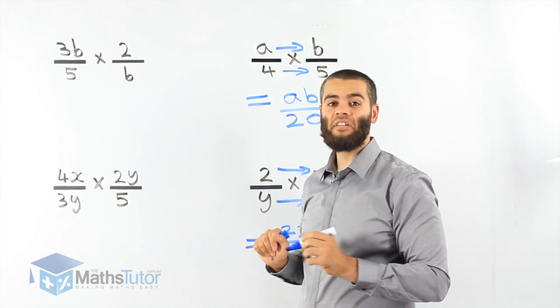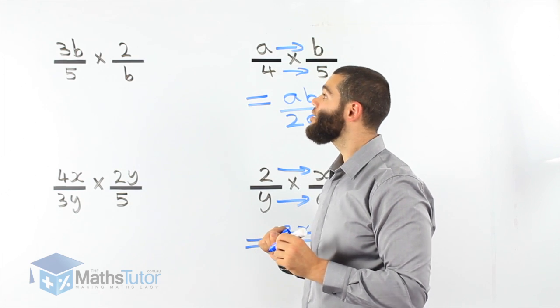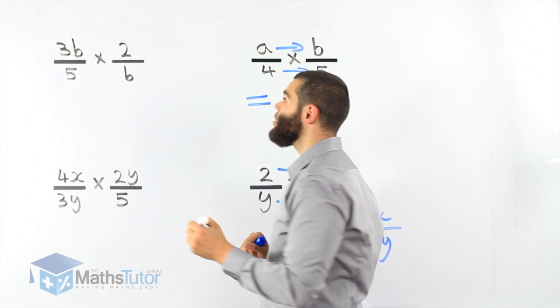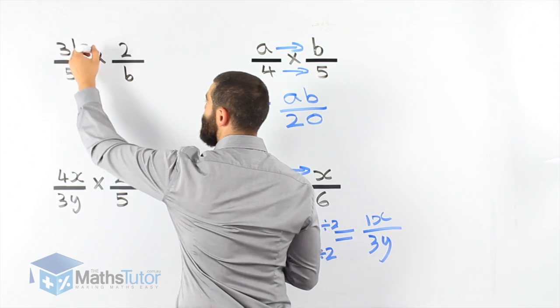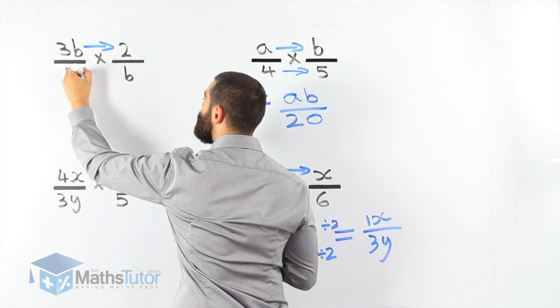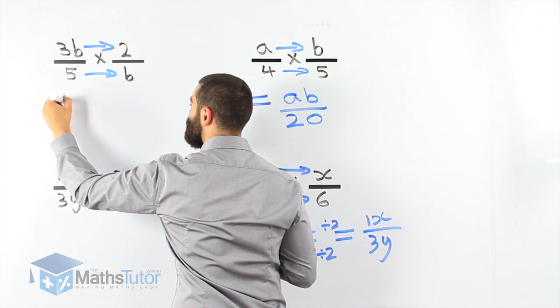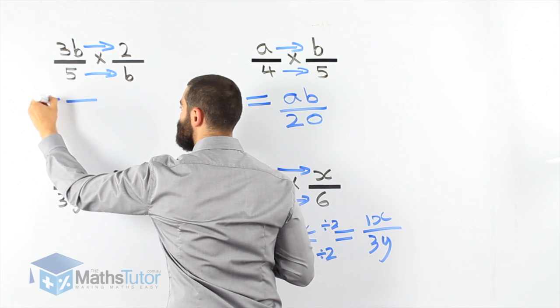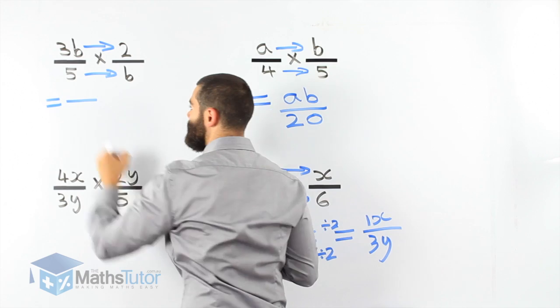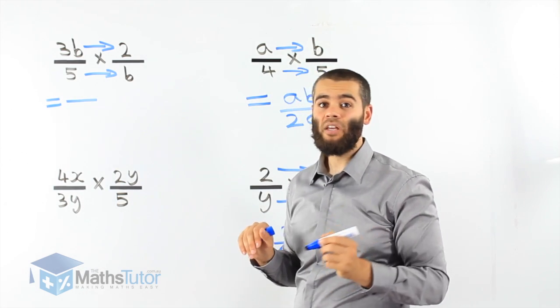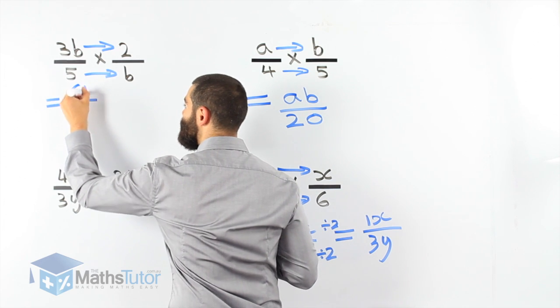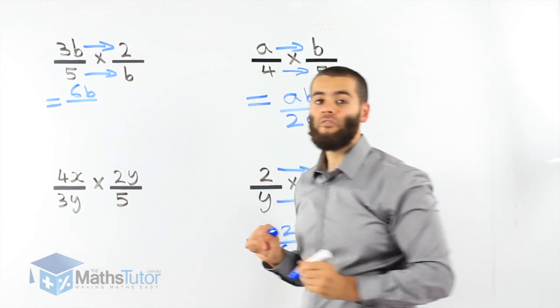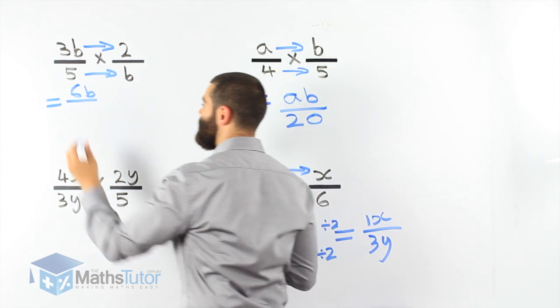Another two examples. We'll do the top one. 3b over 5 times 2 over b. Top times top, bottom times bottom. Top times top, 3b times 2 is 6b. And 5 times b is 5b.